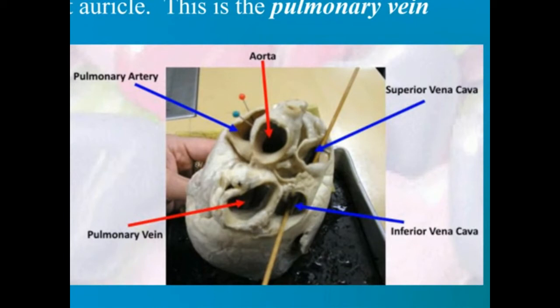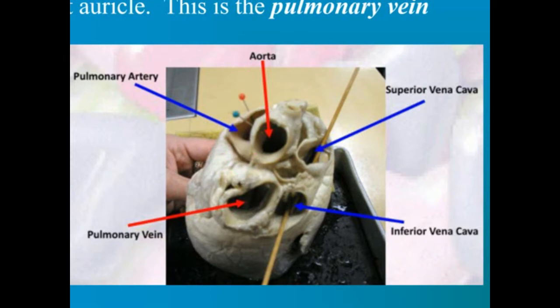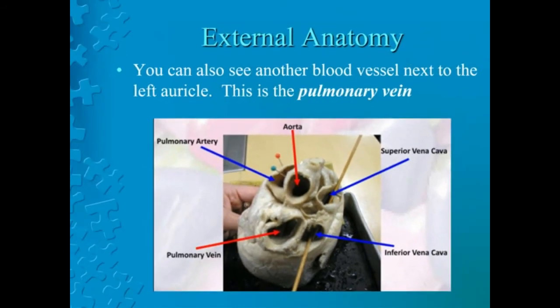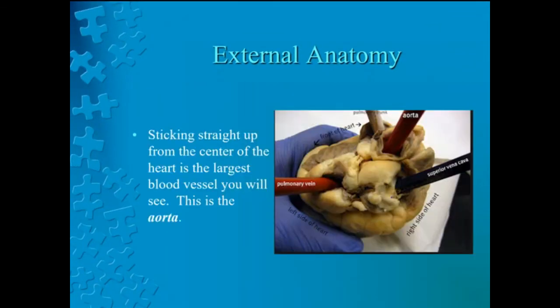The aorta takes oxygenated blood from the left ventricle to the rest of the body. There is a right and left ventricle, referred to collectively as ventricles — the lower chambers of the heart. The aorta branches into more than one artery right after it leaves the heart, so it may have more than one opening on your heart specimen. Look carefully at the openings and you should be able to see that they are connected to each other. Pause to locate the aorta.